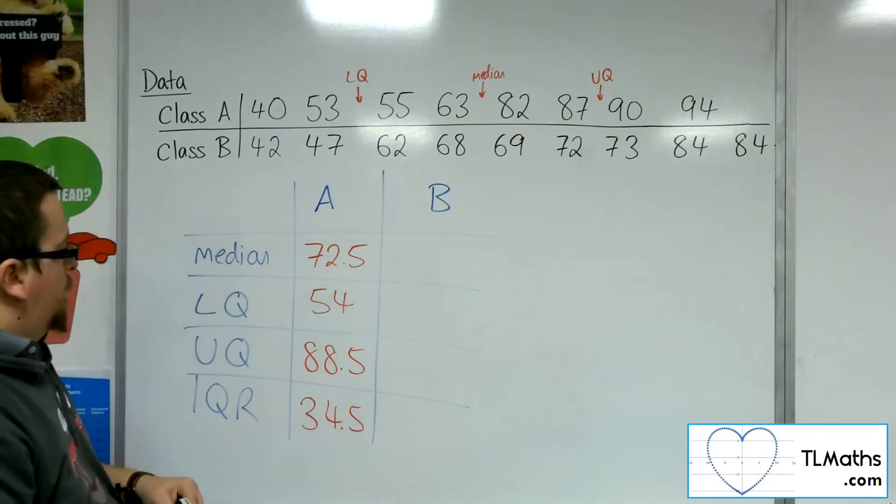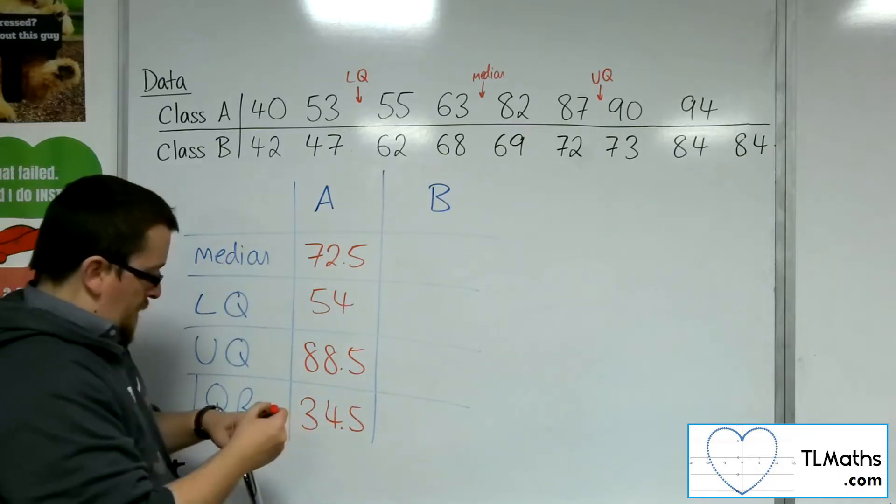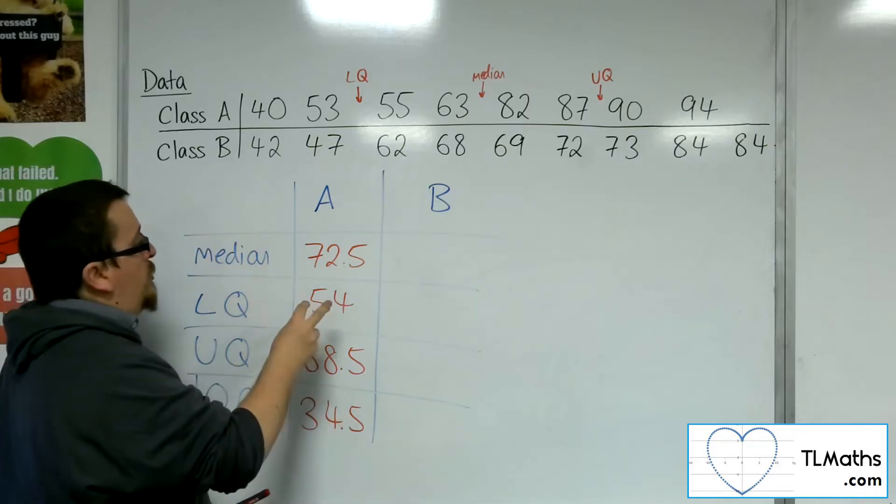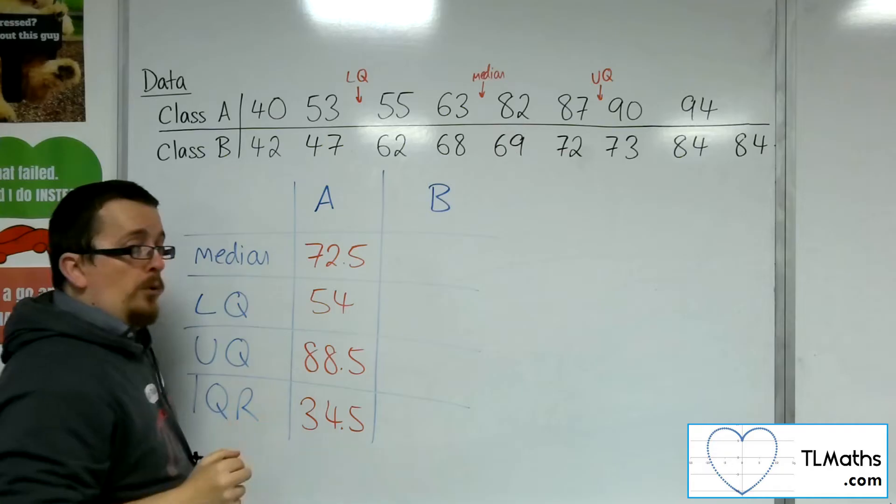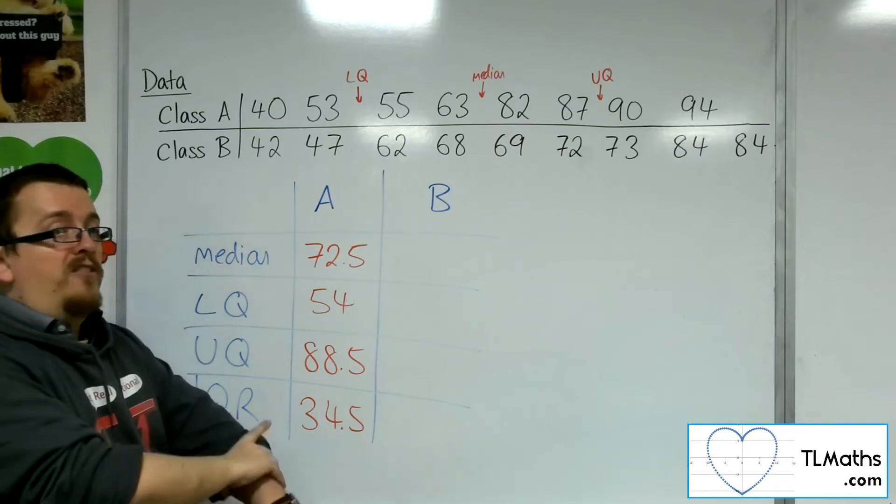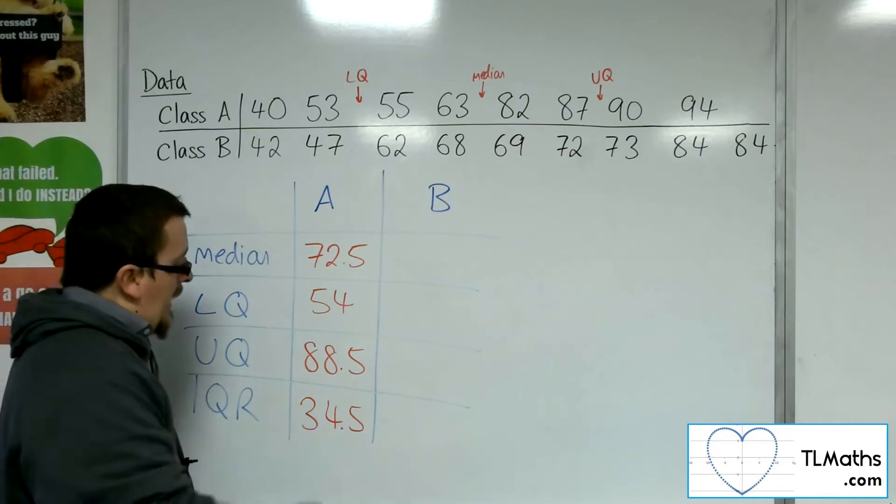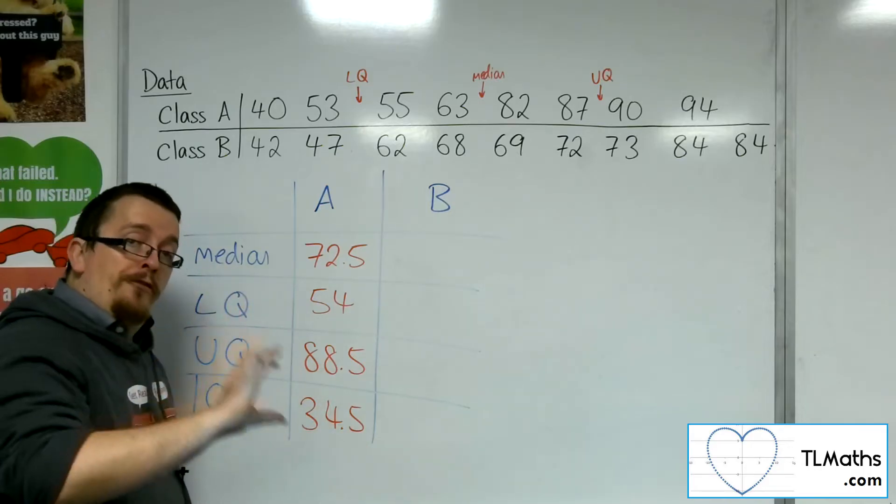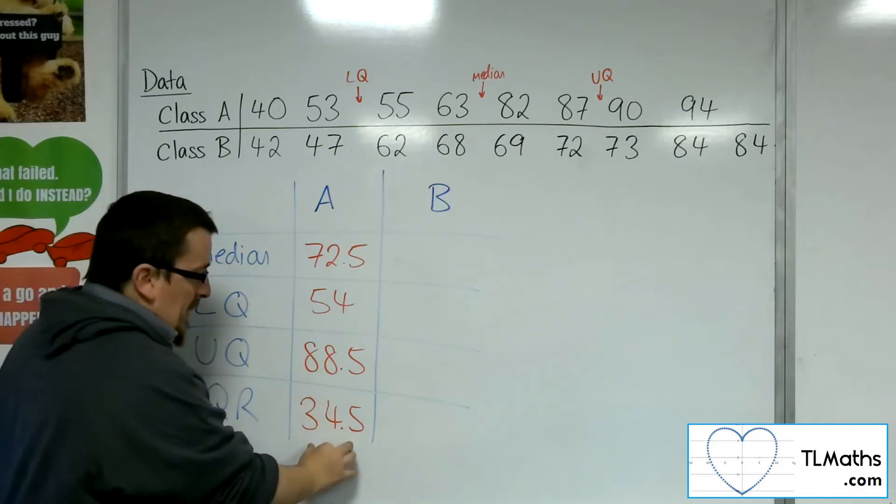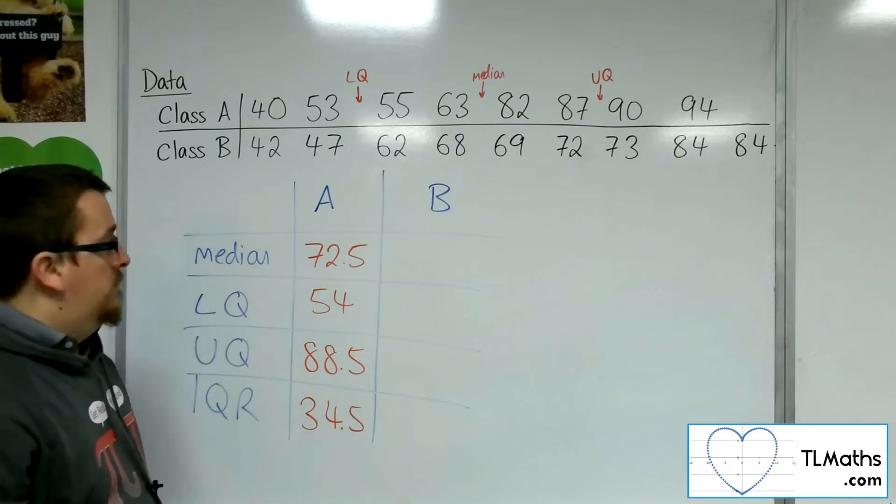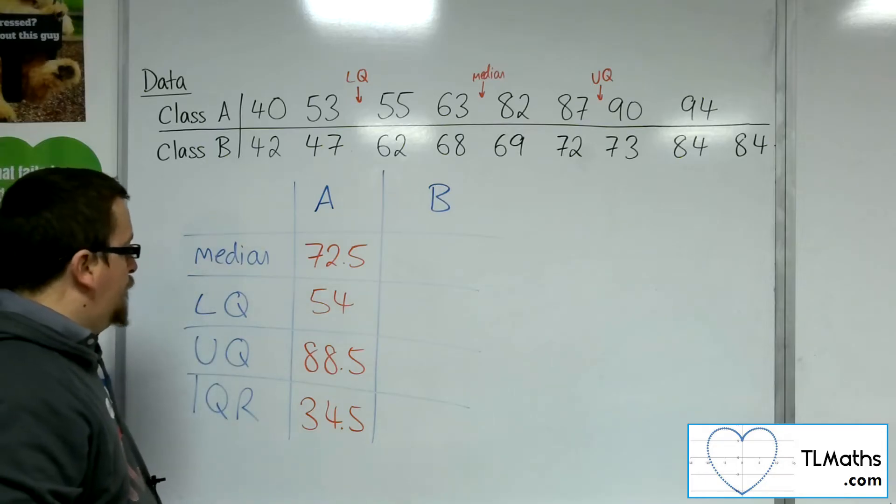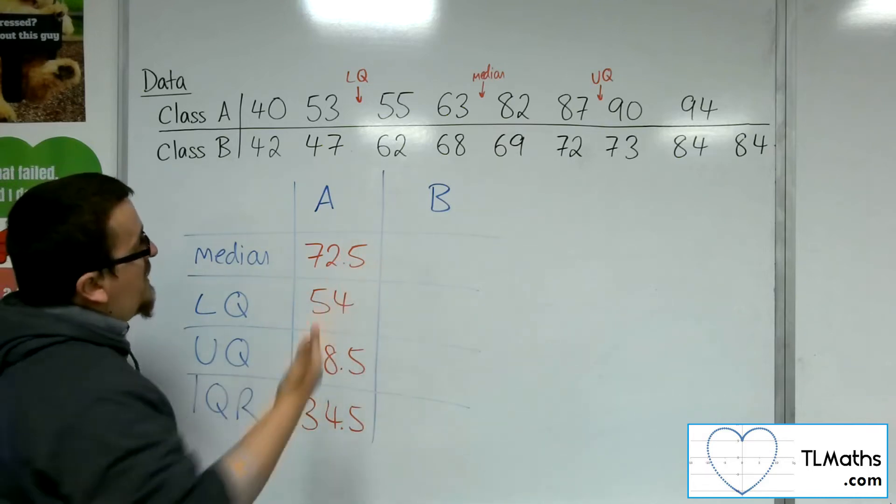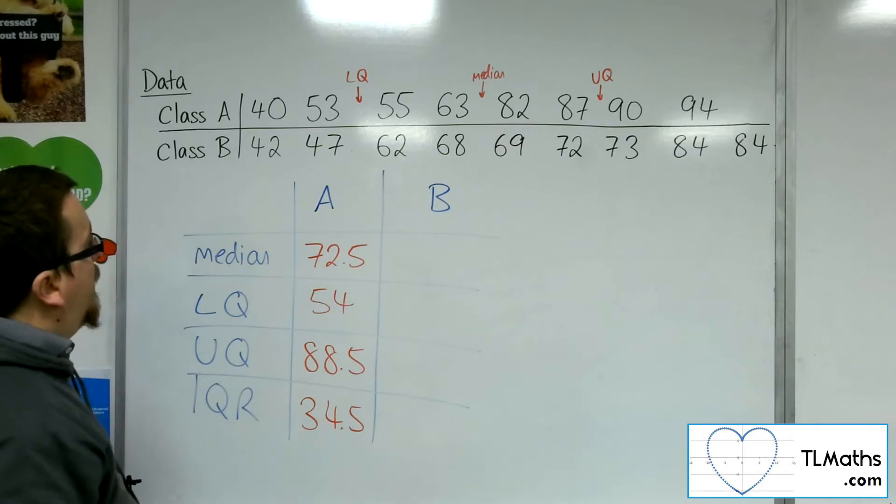So what this tells us is that on average, the student scored 72.5%, and the range of values of the middle 50% is 34.5%. So that is what that data is telling us. So now let's have a look at set B, class B.